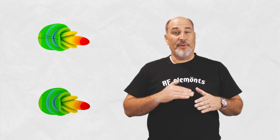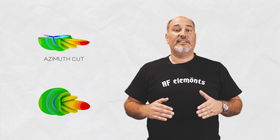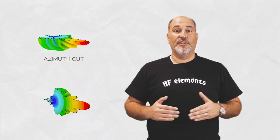If we cut the space diagram on the horizontal plane we call this the azimuth cut. If we cut the diagram on the vertical plane we call this the elevation cut.